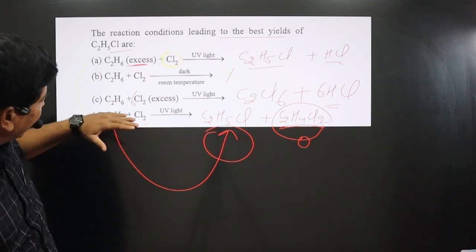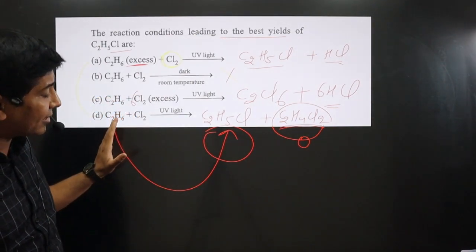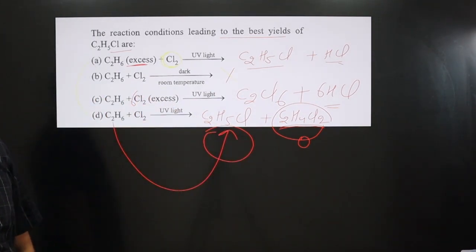The entire concentration of reactant is not converting into C2H5Cl, that is mono-halide.